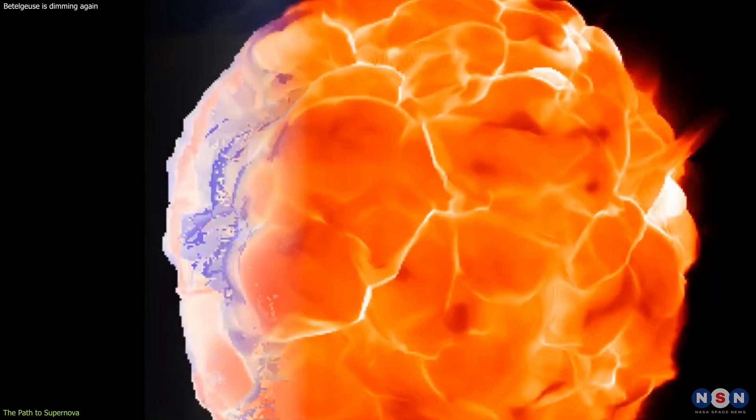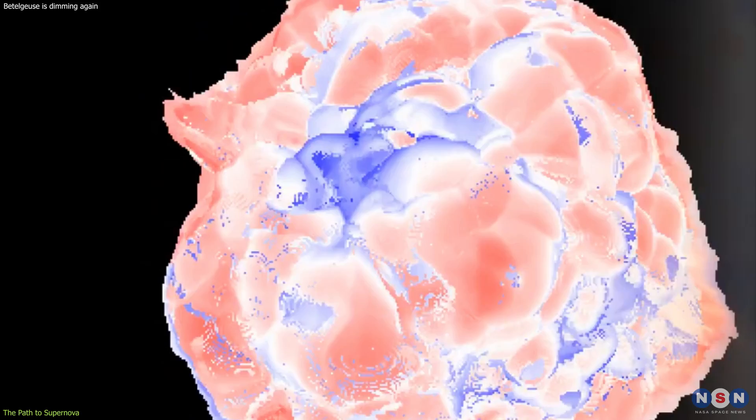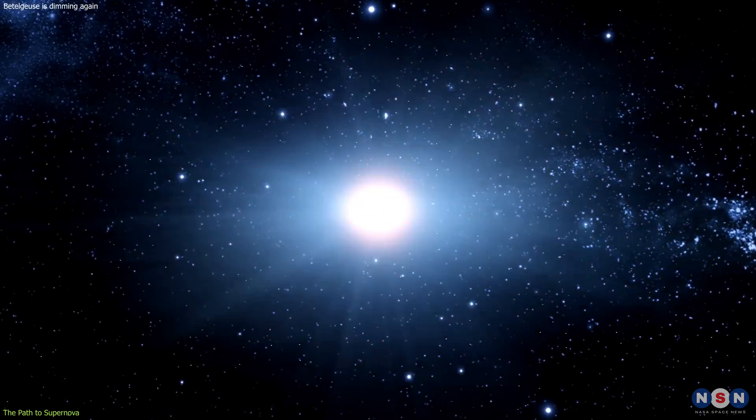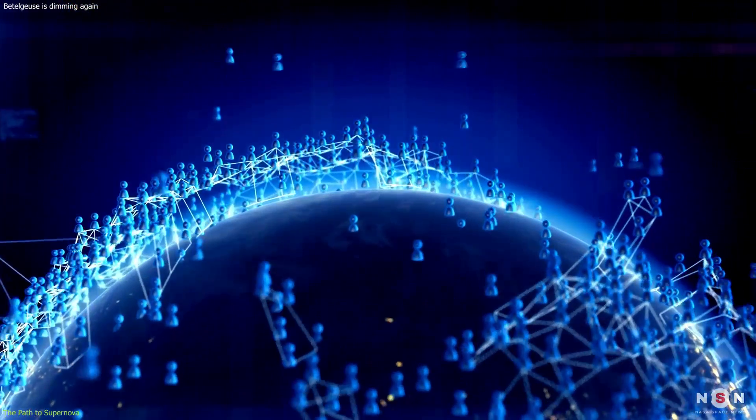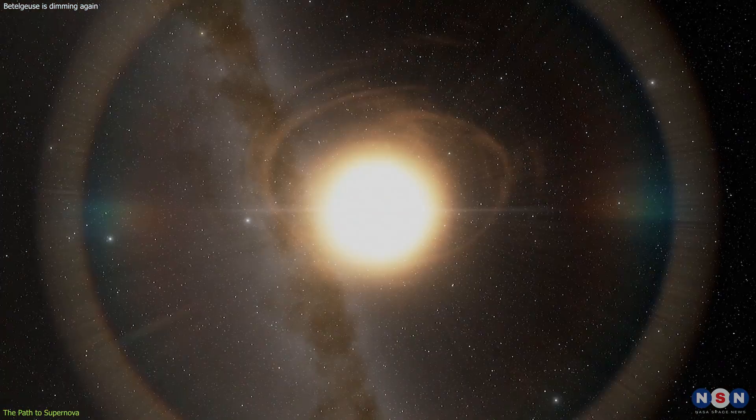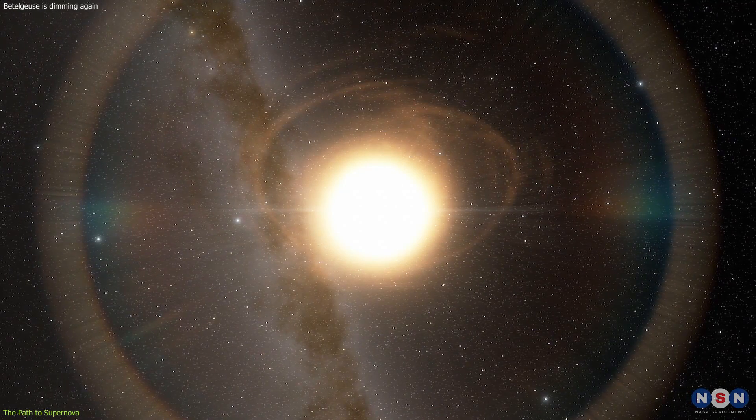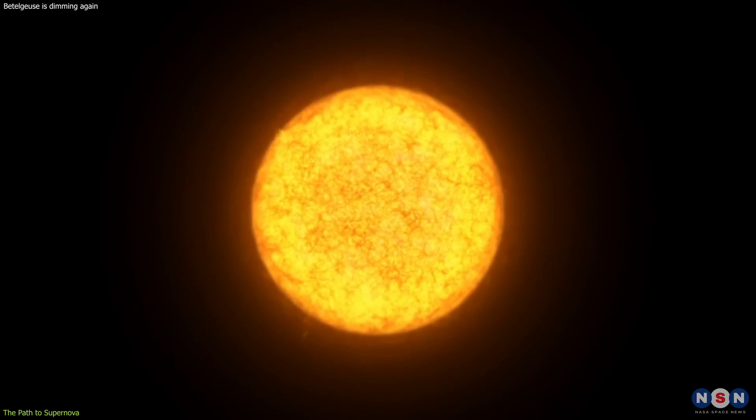The researchers behind the study used computer simulations to model the star's evolution and found that the observed pulsations could be explained by a star on the brink of going supernova. This revelation has sparked a debate within the astronomical community. Some experts caution against jumping to conclusions, noting that the exact stage of Betelgeuse's evolution is difficult to determine. The pulsation periods don't change significantly in the late stages of carbon burning, making it challenging to pinpoint how much fuel the star has left.